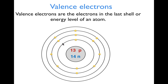If we look at this element right here — which would be aluminum — we count how many electrons are in the outermost shell, which would be shell number three or energy level three. We have one, two, three valence electrons. So if I asked you how many valence electrons aluminum has, you would tell me three valence electrons.